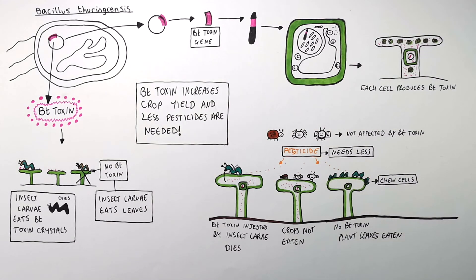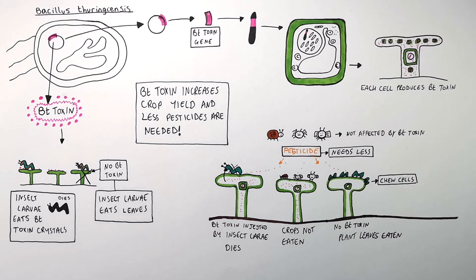There are some concerns. Farmers could be worried that insects become resistant to the Bt Toxin, which would mean they've bought a lot of expensive seeds that will not work — because the insect larvae will develop a resistance to the Bt Toxin and then eat the plants anyway.